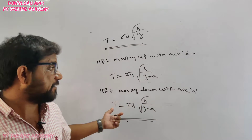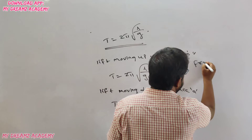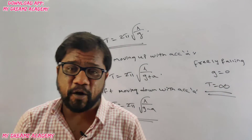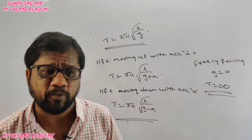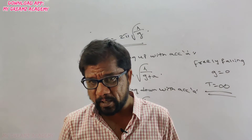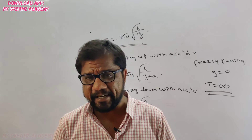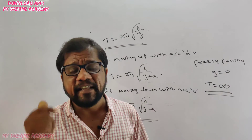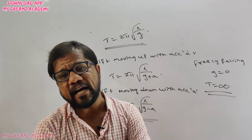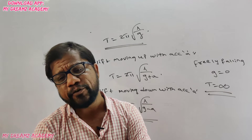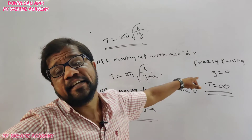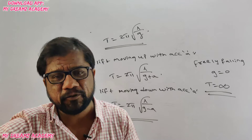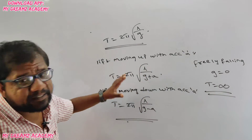In the case of a freely falling lift, the effective g = 0, so the time period becomes infinity. For example: a seconds pendulum (time period = 2 seconds) placed in a freely falling lift has infinite time period because g = 0. Similarly, pendulum clocks are not used in artificial satellites because g = 0 in satellites, making the time period infinite. Spring-based clocks are used as the alternative in artificial satellites.